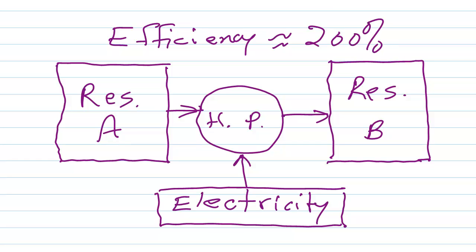Well of course that's impossible. Nothing can have an efficiency of more than 100%. The total energy that you get out of something can never exceed the total energy that you put in, or the total work that you put out can never exceed the total work that you put in.